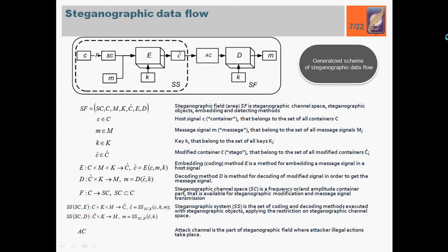The data flow is: after selection of host signal's part that is available for modification, message signal is embedded in a host signal via steganography method E. Key can be used like unique techniques that know the sender and receiver only. The result of embedding is modified signal or stego that cannot be distinguished from a host signal C. Suspects can try to attack the stego, try to decode the secret message in an attack channel. In the decoder, recipient decodes the message signal from stego using unique key.